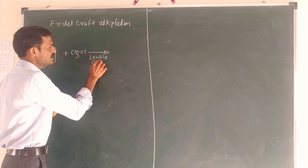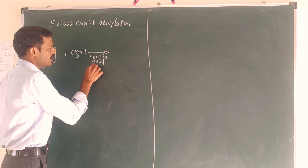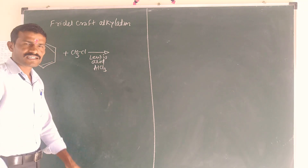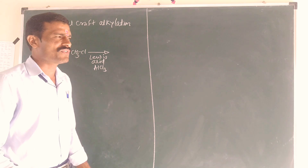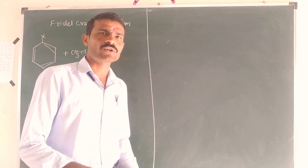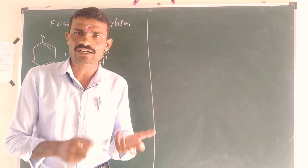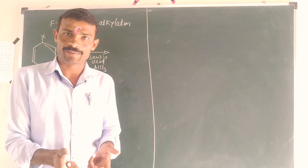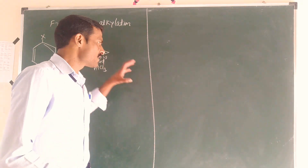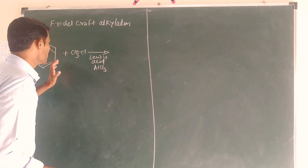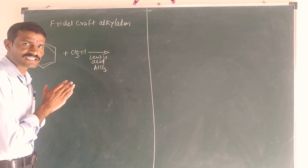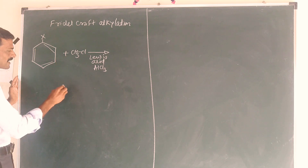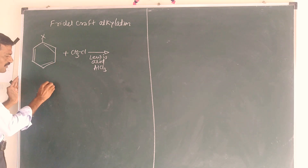The Lewis acid catalyst is AlCl3. If you want to use the electrophilic substitution, you can obtain two products. You can use the electrophilic substitution with this setup.